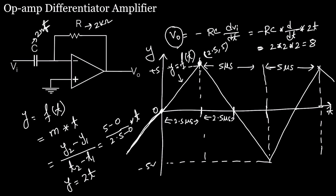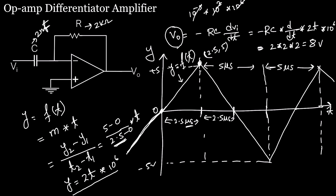R·C = 2 kΩ × 2 nF = 2×10³ × 2×10⁻⁹ = 4×10⁻⁶. The slope of Vi with respect to t is 2×10⁶ V/s (since t is in microseconds). Multiplying: 4×10⁻⁶ × 2×10⁶ = 8. So V0 = -(-8) = +8 V for the rising segment. The 10⁻³ from kΩ and the 10⁶ from microseconds cancel, giving exactly +8 V.